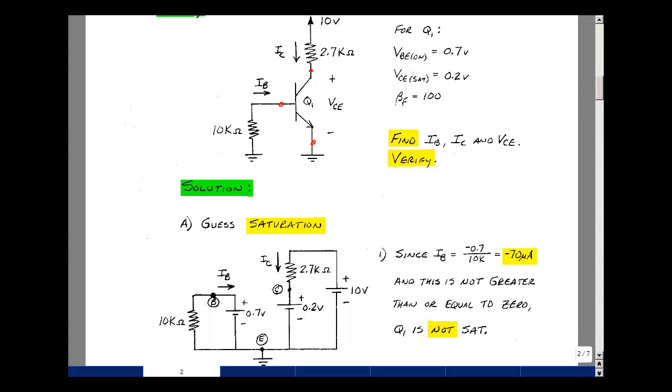Let's find the base current. The current in this direction is going to be this voltage divided by 10K, but this voltage is the same as this one but the opposite sign. This is equal to minus 0.7 volts divided by 10K would be the base current, but that would be a negative number. It needs to be greater than or equal to 0 to be in saturation, so this is not in saturation.